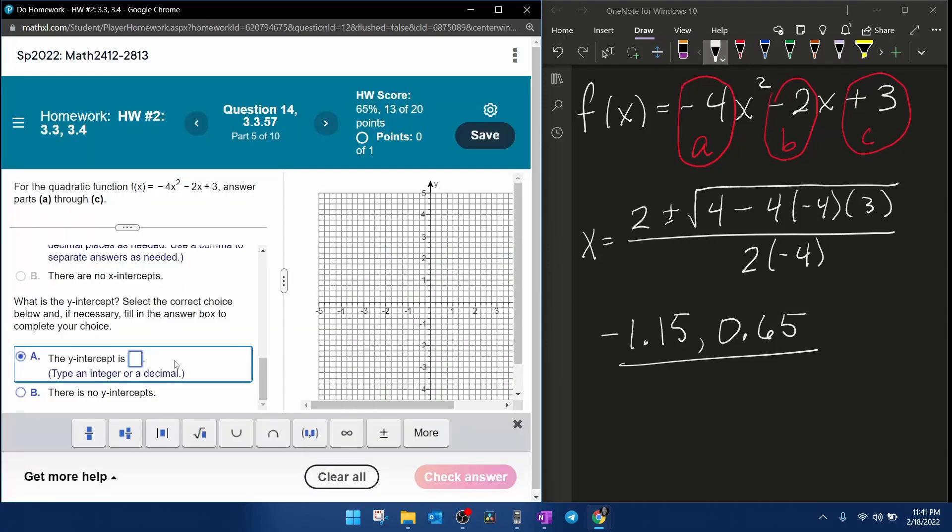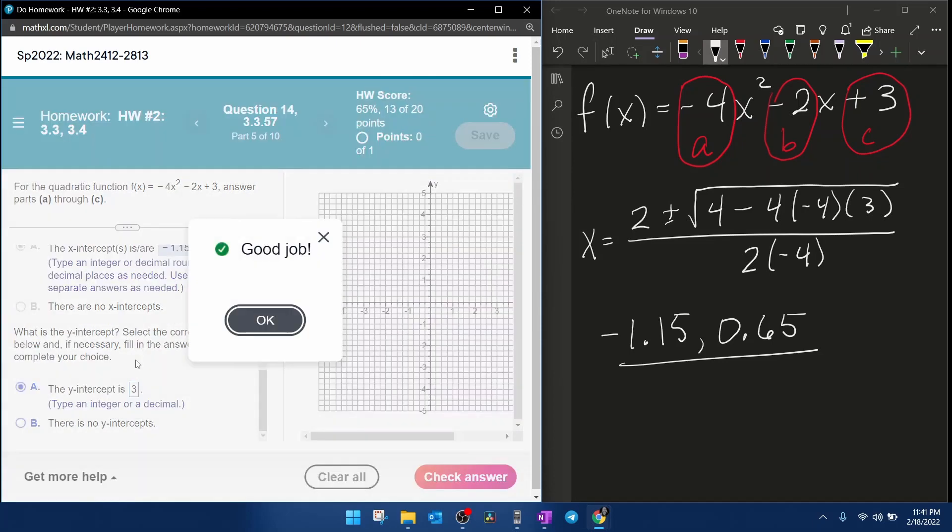Next part, the y-intercept. Remember, the y-intercept for a quadratic function is always the value of c. And again, they do not want an ordered pair. It doesn't specify ordered pair. So they just want the y-coordinate.